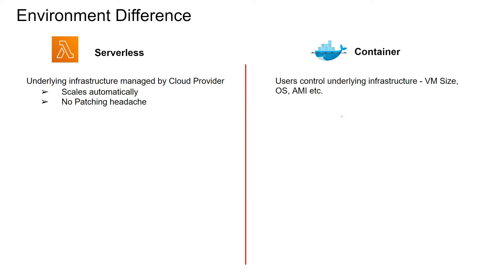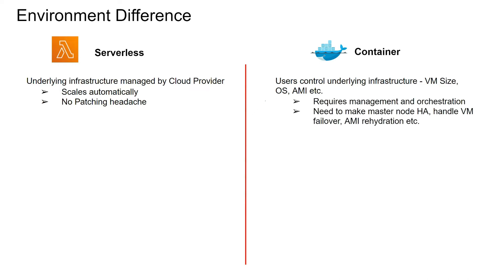On the container side, users control the underlying infrastructure: the virtual machine size, operating system, AMI, etc. So it requires management and orchestration. You need to make the master node highly available if you are running Kubernetes on EC2, handle virtual machine failover, AMI rehydration, etc.